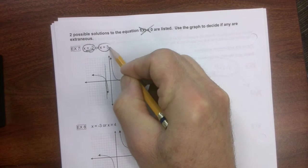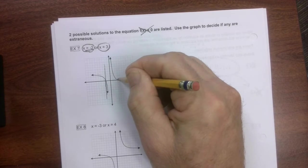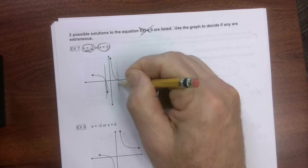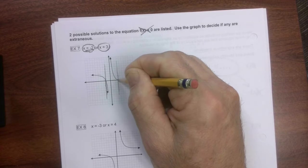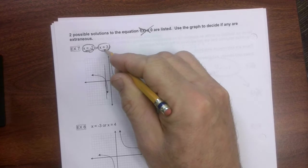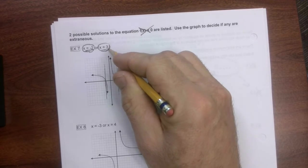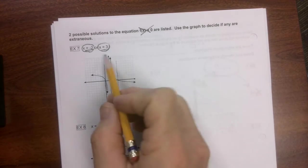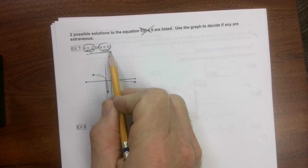Now let's take a look at this line, x = 3. One, two, three. We draw a line there, and we can see that the graph crosses that line. Therefore, this is a solution and it's not extraneous.